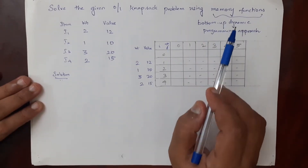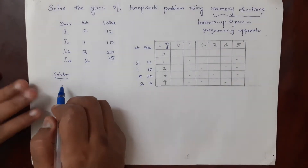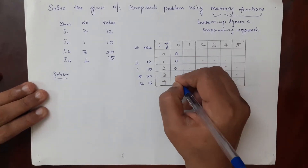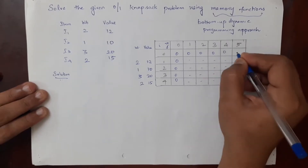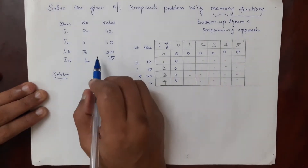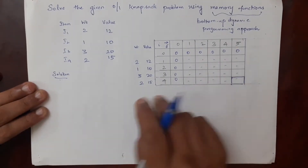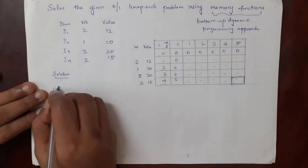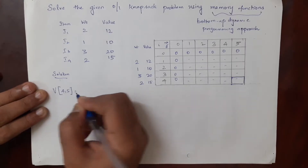Here we are going to fill only the cells that are required, based on the formula. We already know that the first column should be all filled with zeros, and also the first row should be all filled with zeros, and all other cells should be of null value. We already know the final solution will be in cell 4 comma 5.